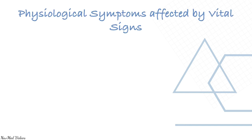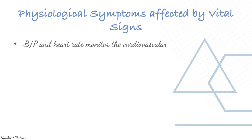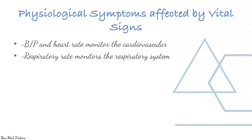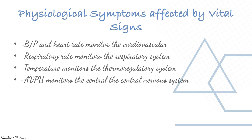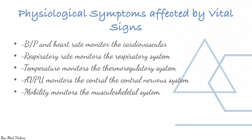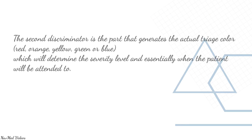Physiological symptoms are assessed through vital signs: blood pressure and heart rate monitor the cardiovascular system; respiratory rate monitors the respiratory system; temperature monitors the thermoregulatory system; AVPU monitors the overall central nervous system; mobility monitors the musculoskeletal system; and trauma refers to the presence of any injury. The second discriminator generates the actual triage color — red, orange, yellow, green, or blue — determining the severity level and when the patient will be attended to.